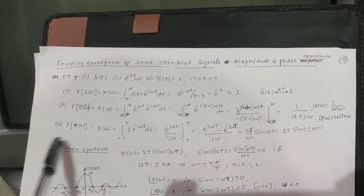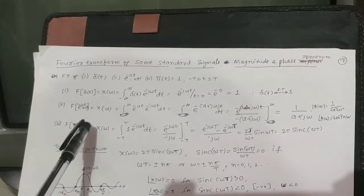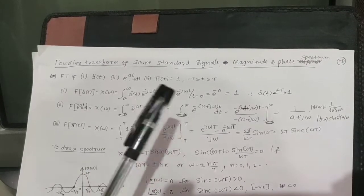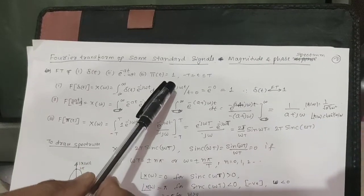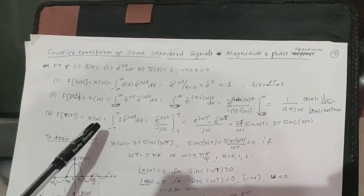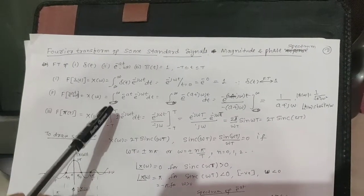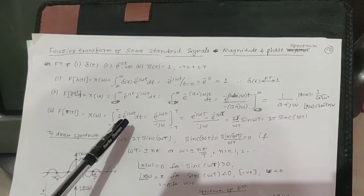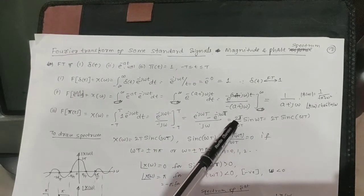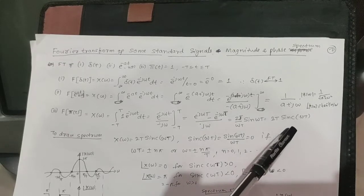Next, we will find the Fourier transform of a standard rectangular signal, given by Π(t) = 1 for −T ≤ t ≤ T. This gives X(ω) = ∫ from −T to T 1 · e^(−jωt) dt. After simplification, we get X(ω) = 2T · sinc(ωT), which is proportional to the sinc signal.